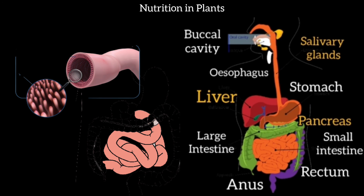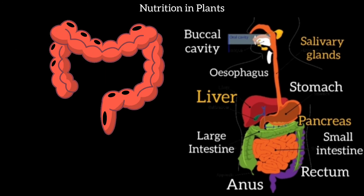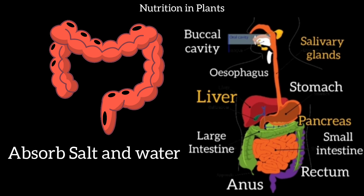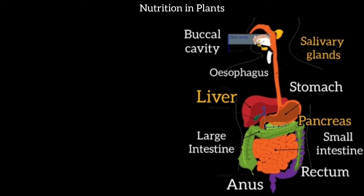Villi in the small intestine absorb nutrients in liquid form and pass them into blood vessels. Nutrients are then carried to the whole body. Unabsorbed food goes to the large intestine, then to the rectum where it is stored, and finally expelled via the anus as waste.